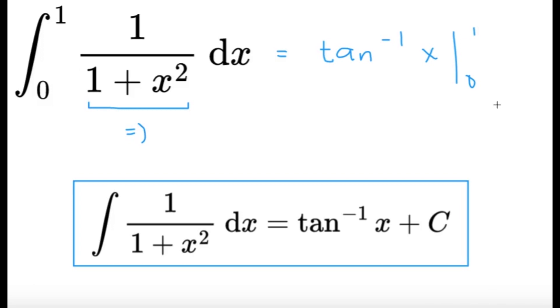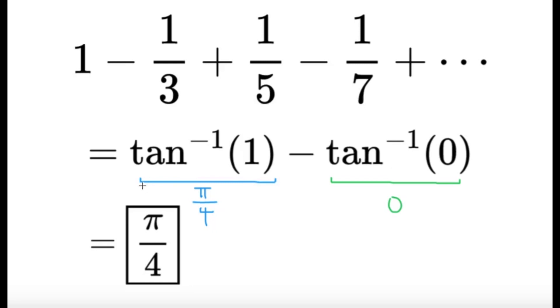Now, the inverse tangent of x evaluated from 0 to 1, that's just simply equal to the inverse tangent of 1 minus the inverse tangent of 0. Now, the inverse tangent of 1, it's going to be π over 4 or 45 degrees. But we just use radians here. So the inverse tangent of 1, that's going to be π over 4 because tangent π over 4, that's equal to 1. And then here, the inverse tangent of 0, that's going to be 0 because tangent of 0 or 0 degrees, that's equal to 0.